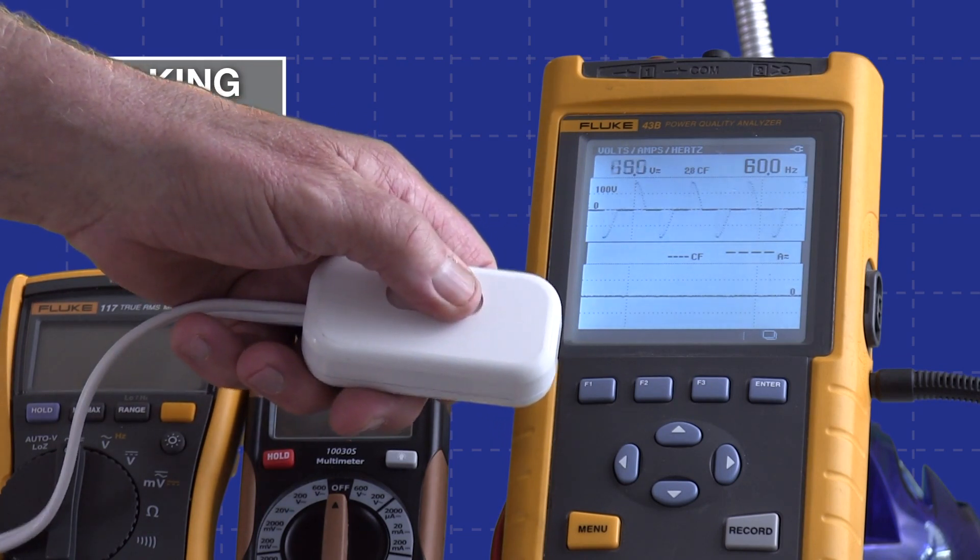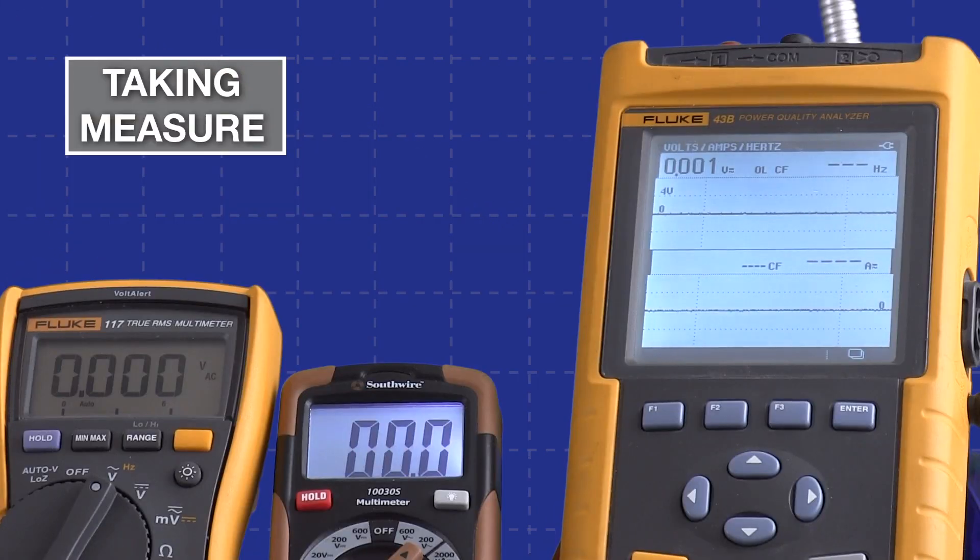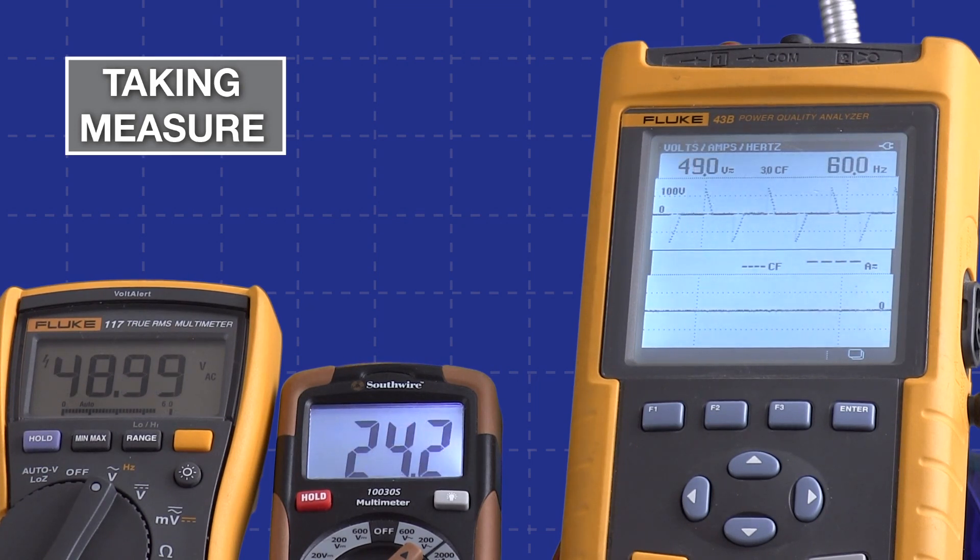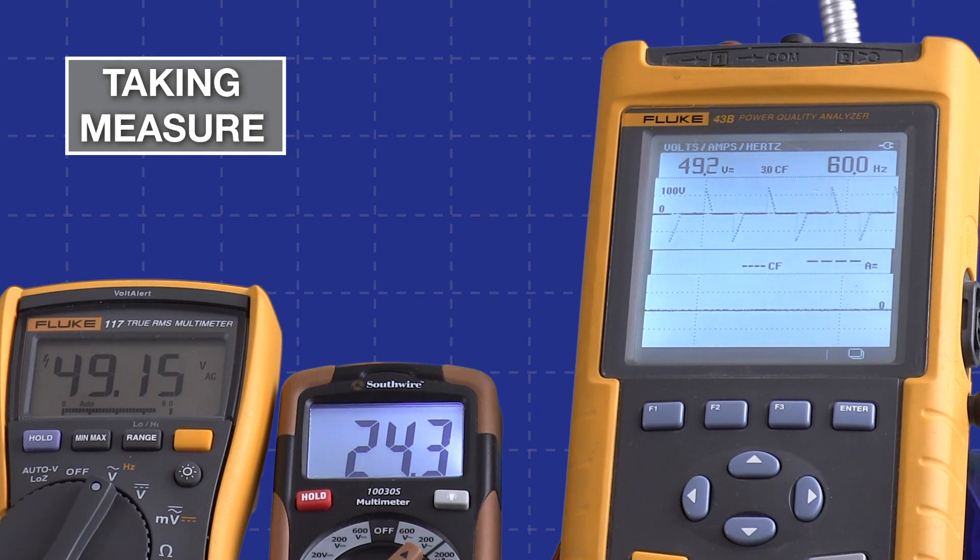We now have all three of our test instruments connected to our dimmer circuit, and I'm going to operate the dimmer and we'll see what happens to the voltage on each of these instruments. I'll start now and we'll go up a little bit. If you look, you should see 48 or 49 volts on the Fluke power quality meter with the shark fin, and then the Southwire showing 24, but the Fluke 117 is also showing 49. So the two Fluke meters show the same voltage.